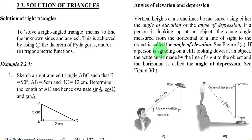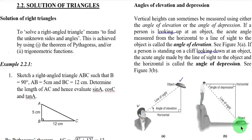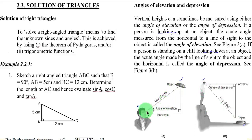Our next sub-topic is angles of elevation and depression. The keyword here is looking up and looking down. Imagine you have an object and you are observing it from a point. Between you and the object, we can draw the line of sight. The angle between the horizontal line and the line of sight — when the line of sight is above the horizontal — is what we call the angle of elevation.